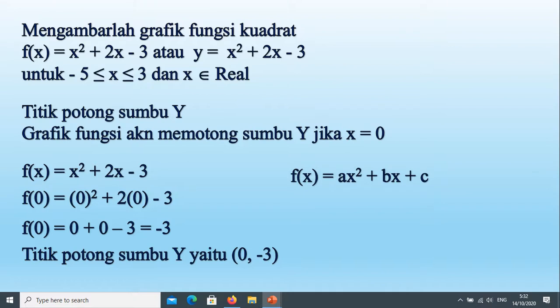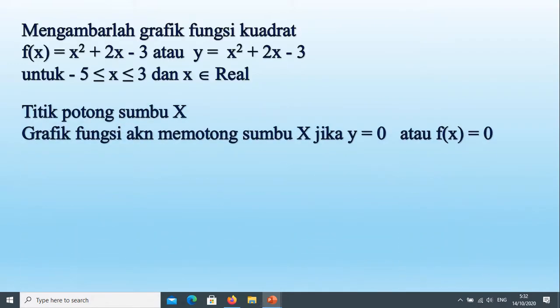Kalau fungsinya adalah f(x) sama dengan ax kuadrat tambah bx tambah c, maka titik potong sumbu y, y-nya adalah kita langsung bisa ambil yaitu (0, c). Nah sekarang perhatikan titik potong sumbu x, akan memotong sumbu x jika nilai y-nya adalah 0 atau nilai f(x) adalah 0. Berarti f(x) kita atau y-nya kita ganti dengan 0, 0 sama dengan x kuadrat tambah 2x kurangi 3.